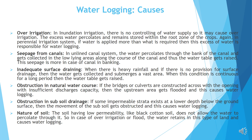Inadequate surface drainage: When there is heavy rainfall and if there is no provision for surface drainage, then the water gets collected and submerges a vast area. Obstruction in natural water courses: If the bridges or culverts are constructed with insufficient discharge capacity, then the upstream area gets flooded and this causes waterlogging. Obstruction in subsoil drainage: If some impermeable strata exists at a lower depth below the ground surface then the movement of the subsoil gets obstructed and this causes waterlogging.